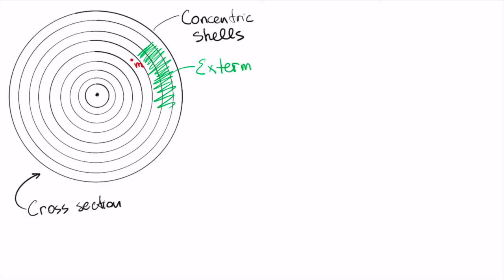There are two types of shells, internal and external, relative to our particle. Let us first understand forces coming from external shells.